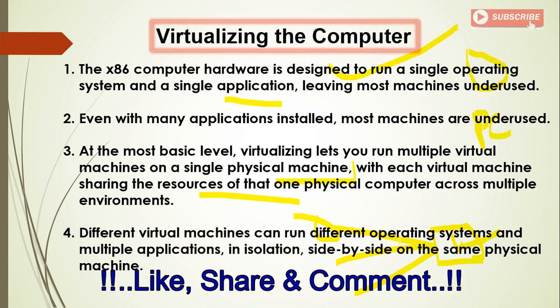Different virtual machines can run different operating systems and multiple applications. For example, with three virtual machines, one can run Windows 7, another Linux, another a server OS — whatever you want. Resources are allocated from the physical machine: if you assign 4 GB to one VM and 16 GB to another, they all draw from the physical machine. This is how you virtualize a computer using VMware vSphere or similar technologies.